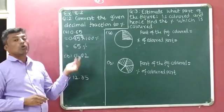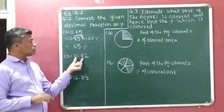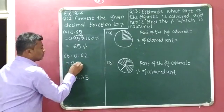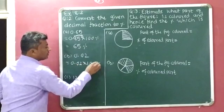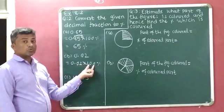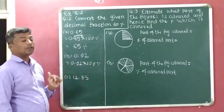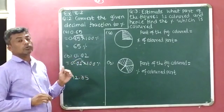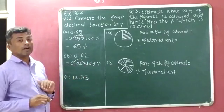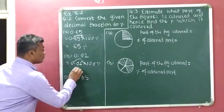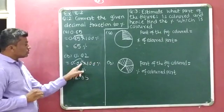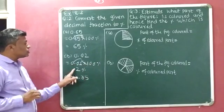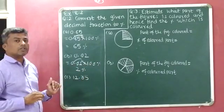Now 0.02 also has to be converted into percentage. So 0.02 multiplied with 100%. Since 100 has 2 zeros, the decimal point moves right side by 2 places, coming after the 2. Since no digit is available after 2, we cannot write the decimal point. The final answer is 2% — we cannot write 0.02% because a number cannot start with 0.